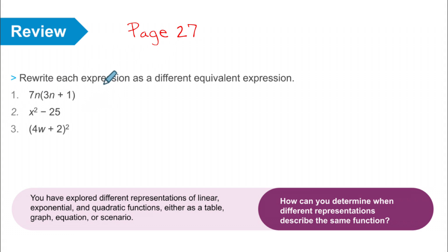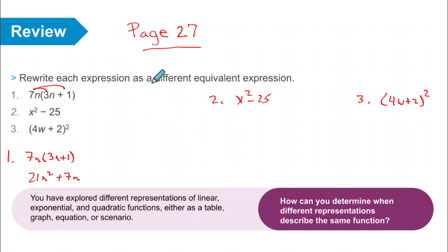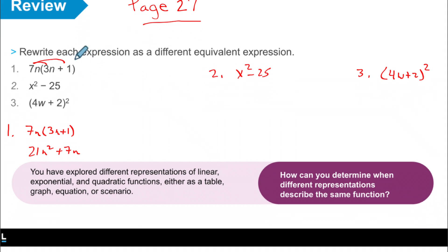You need to turn to page 27 and complete numbers 1, 2, and 3 — yes, you actually have to do it, it's not an option. This is to engage your brain. When you're done, here's the direction: it says rewrite each expression, so read the directions carefully. They want you to write it a different way — an equivalent expression, which means algebraically equivalent.